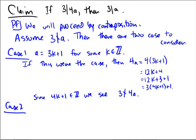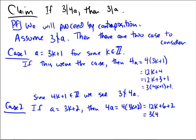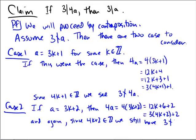So then what's case 2? Well, case 2, if a were equal to 3k plus 2, then 4a would be equal to 4 times 3k plus 2, which would be 12k plus 8, so here I'm just going to write plus 6 plus 2, because then I can write it as 3 times 4k plus 2 plus 2. And again, since 4k plus 2 is an integer, we still have that 3 does not divide 4a.